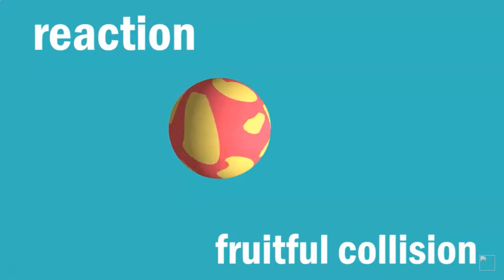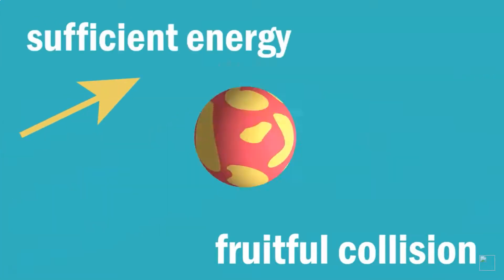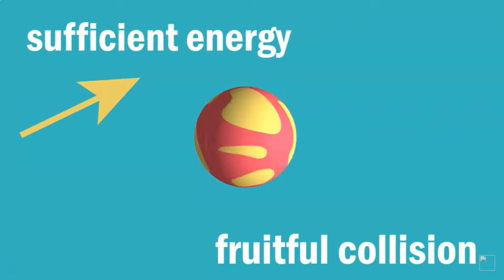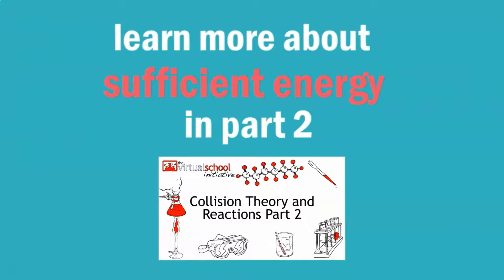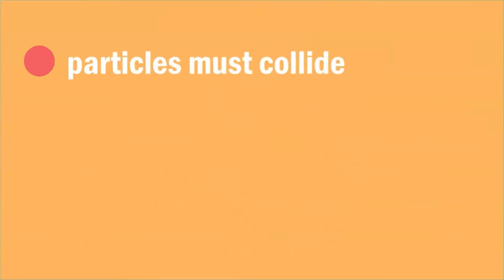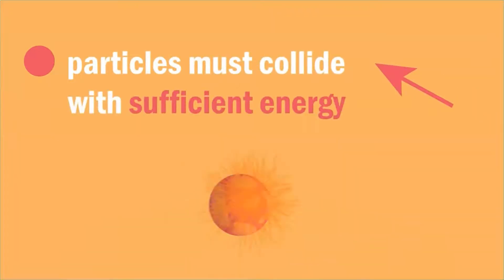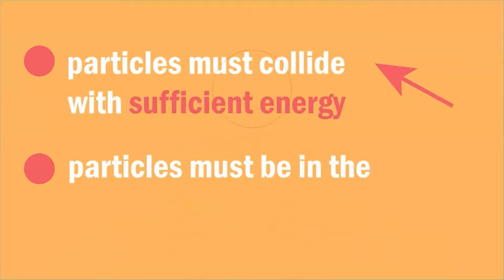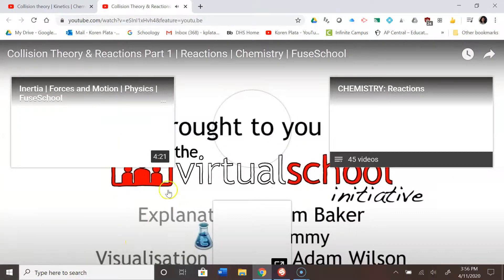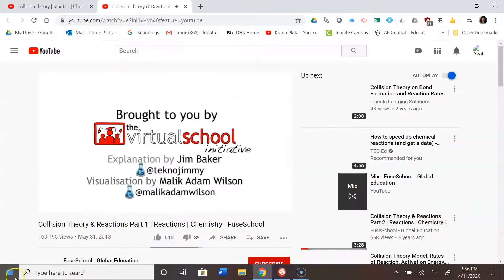For a collision to be fruitful, the reacting particles must collide with sufficient energy. To recap: for a reaction to occur, particles must collide with sufficient energy, and particles must be in the correct orientation.